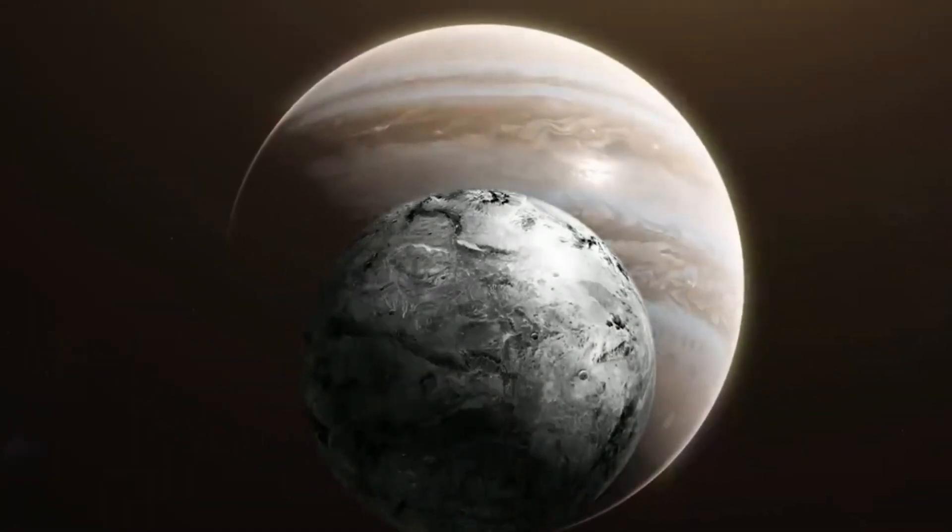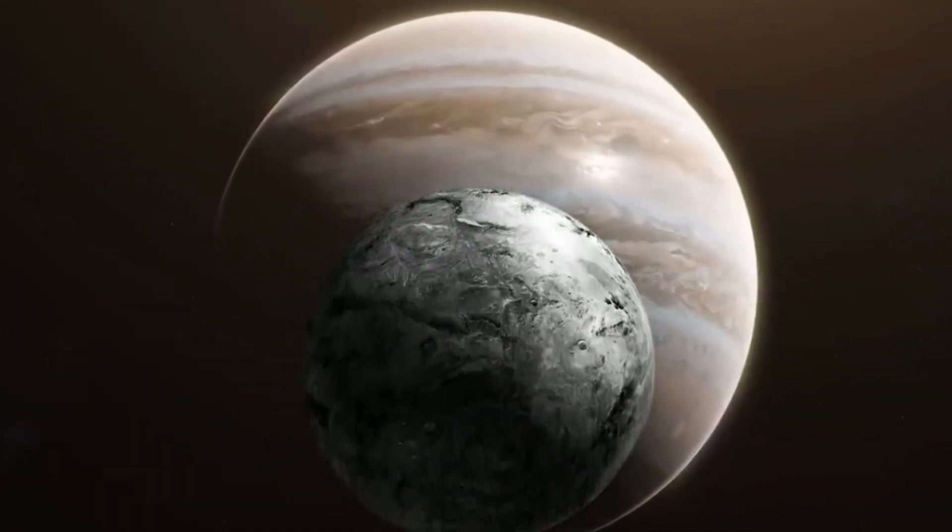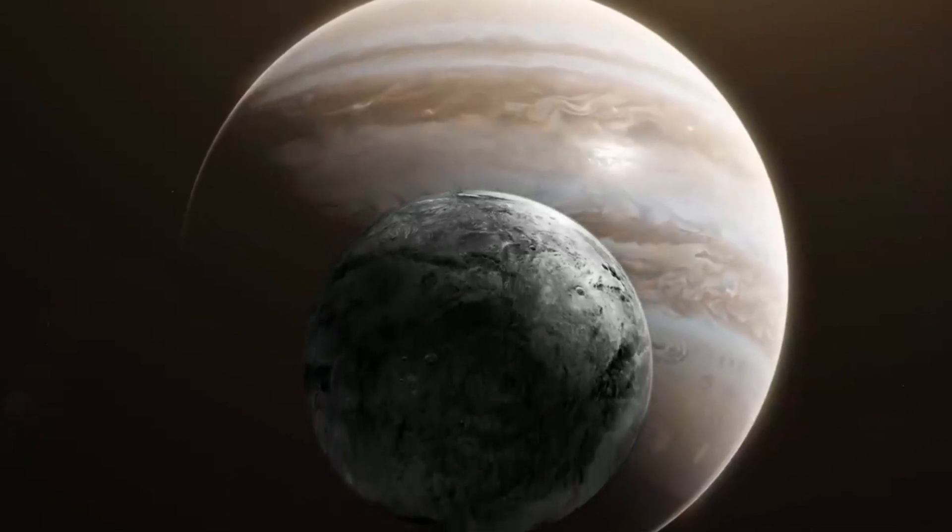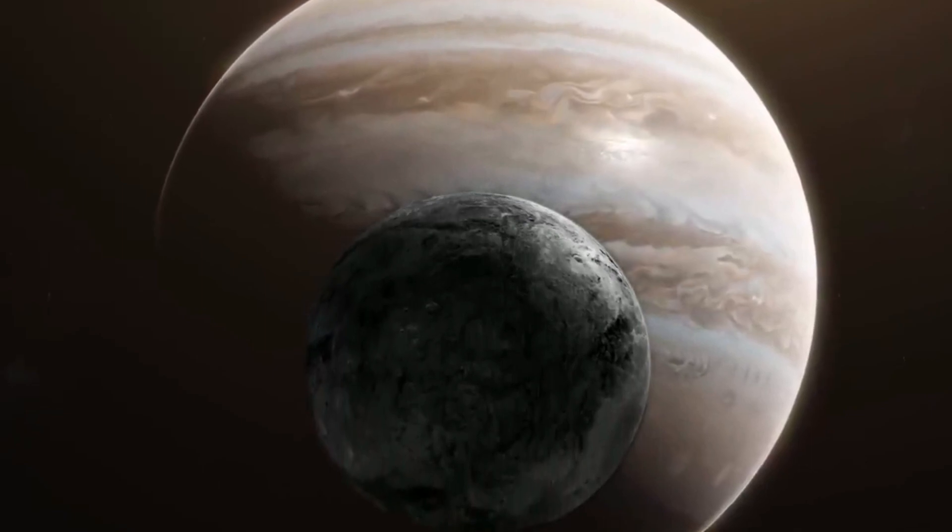If something did hit Jupiter a long time ago, the impact must have been very strong, maybe ten Earth masses, to have stirred up the planet's core and made it look the way it does now.